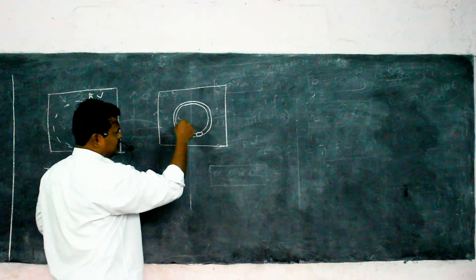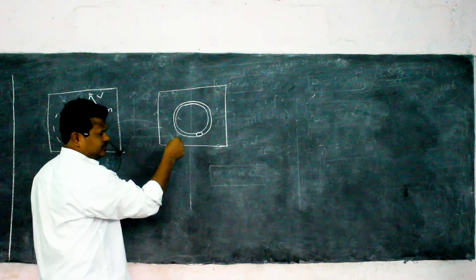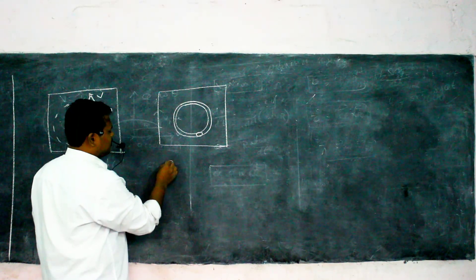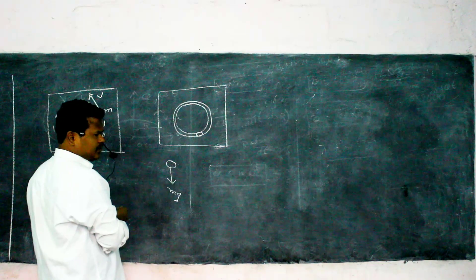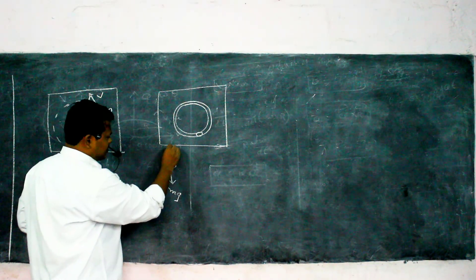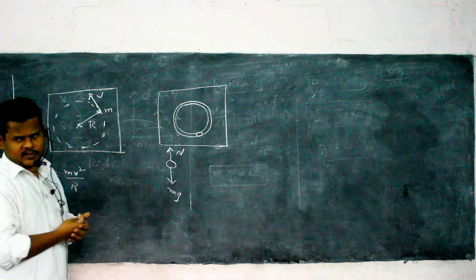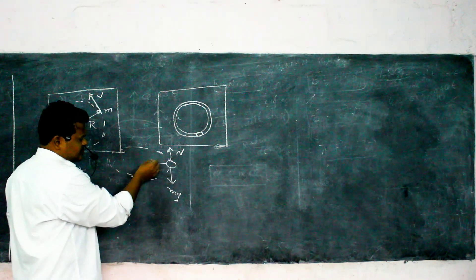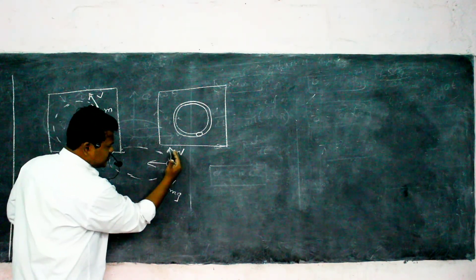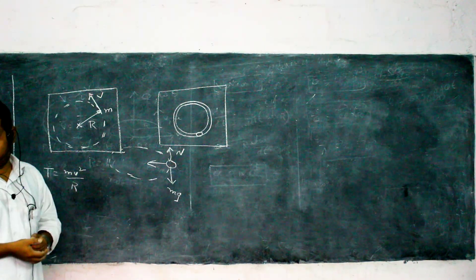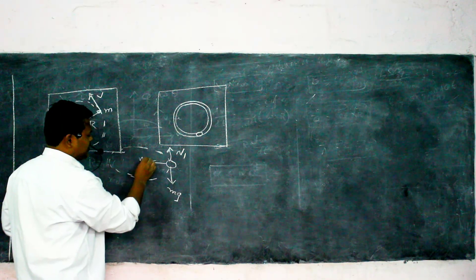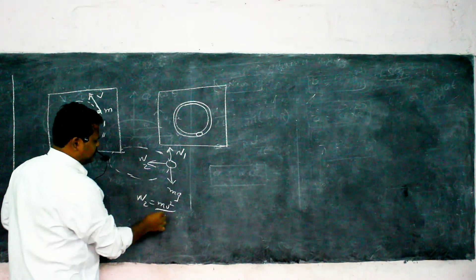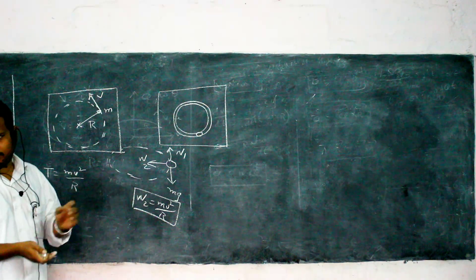Taking the free body diagram of the ball: weight mg acts downward and the table gives normal reaction N1 upward. The groove provides normal reaction N2 as the centripetal force for circular motion. So N2 = MV²/R.